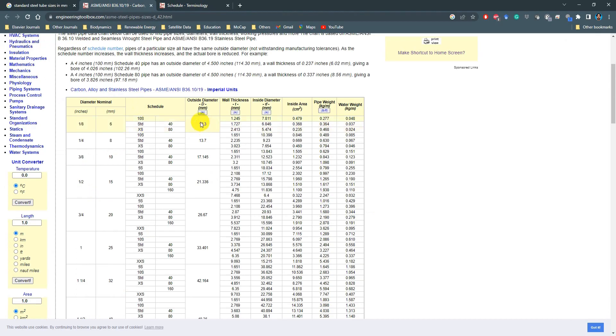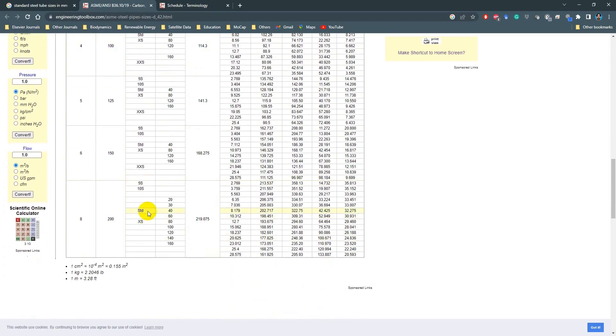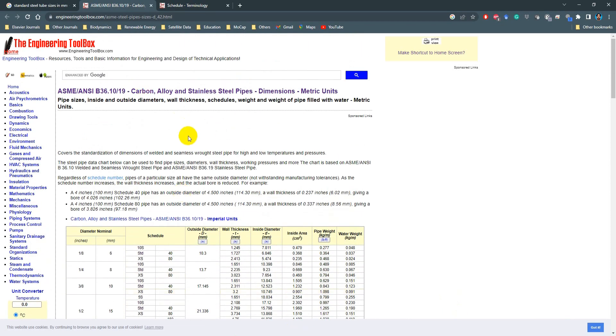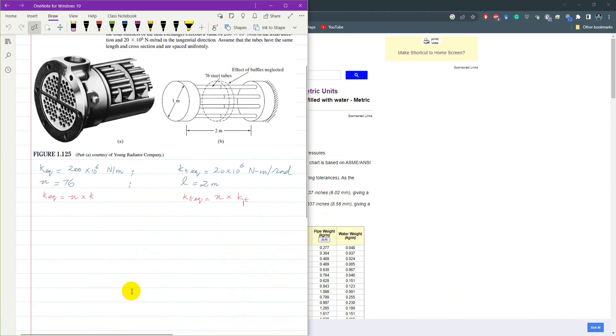their outside diameter starts from 10.3 millimeter, then 13.7, 14. So it keeps on increasing. And for smaller tubes, the diameter is around 15% of outside diameter. And for a larger diameter tube, it is like 5%. So from the standard steel tubes, outside diameter D, thickness of tube T is 5 to 15% of outside diameter D.